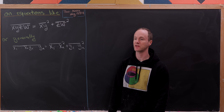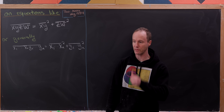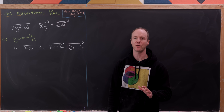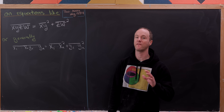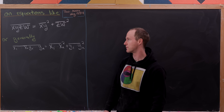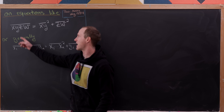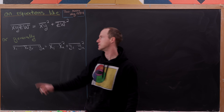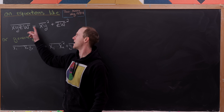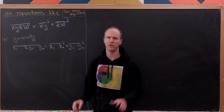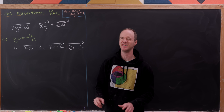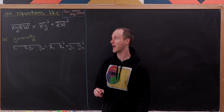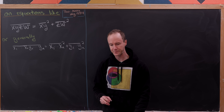Today we're going to look at a particularly aesthetic equation. Let's say you have a four-digit number with digits x, y, z, w — where the line over them means those are digits, not the product x times y times z times w.